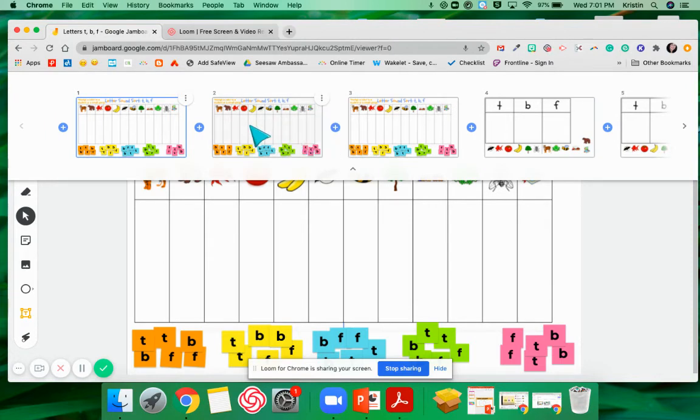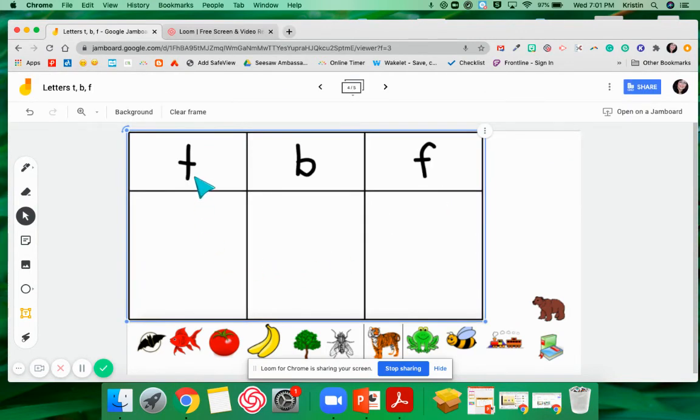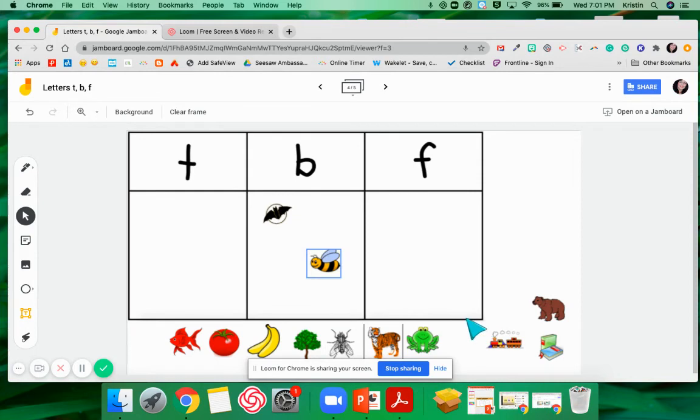So that is the first one, the letter sorting. And then I also made one for a picture sort. So we have T, B, and F up at the top and the students just take a picture and drag and drop it into the correct column. So you can see it's very easy for them to move and I think it's a nice way to engage them. Everybody can have a chance to just grab an icon and drag it where they want.